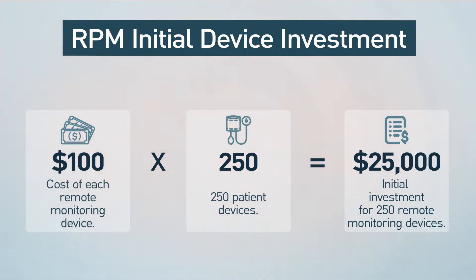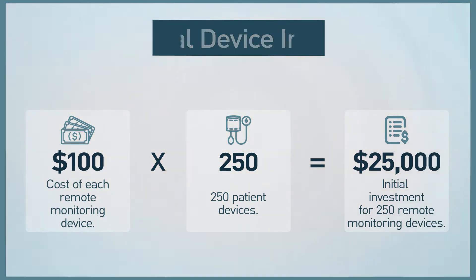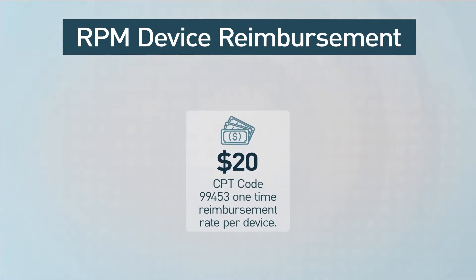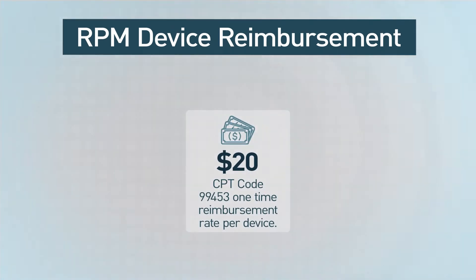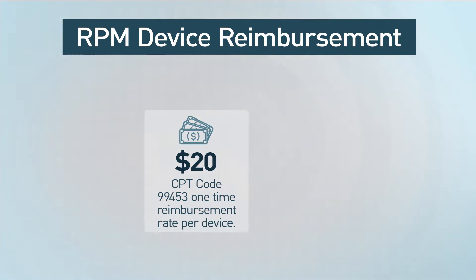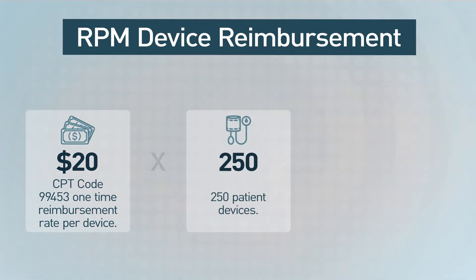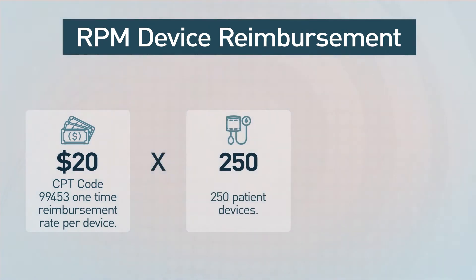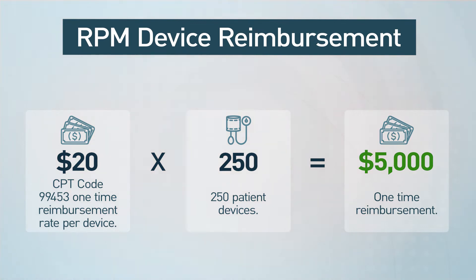Now, I know $25,000 seems like a lot, but let's start with some codes that can help you offset that cost. The first is a one-time CPT code designed for training, education, and setup of the device. This is code 99453, which provides about $20 in reimbursement for each device that you configure. With 250 patients and devices, that's $5,000 right there.